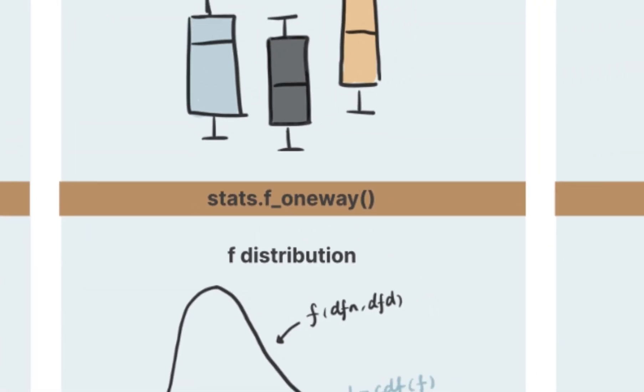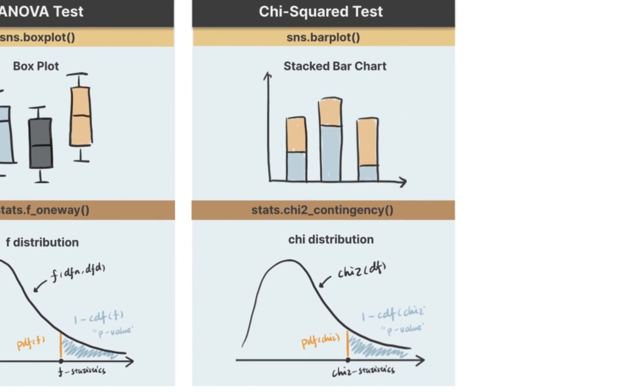The last statistical test we are going to introduce is chi-squared test, which is mainly used for testing the relationship between two categorical variables. The null hypothesis of chi-squared test is two categorical variables are independent, and the alternative hypothesis is that they are dependent.